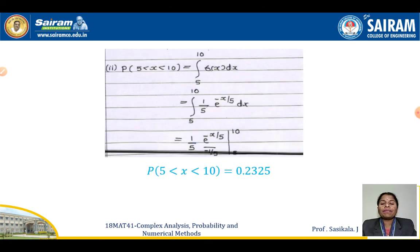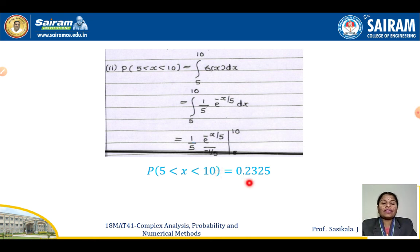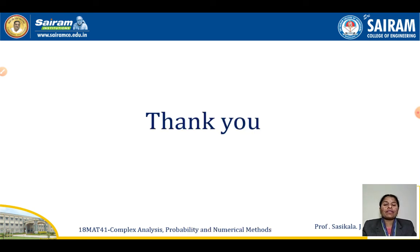For the second question, P(5 < X < 10): integrate from 5 to 10 of (1/5) e to the power minus x by 5 dx. After integration from 5 to 10, the answer is 0.2325. You can verify with a calculator. These are the simple problems for exponential distribution under continuous probability distributions. Thank you.